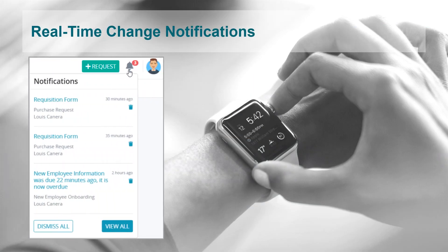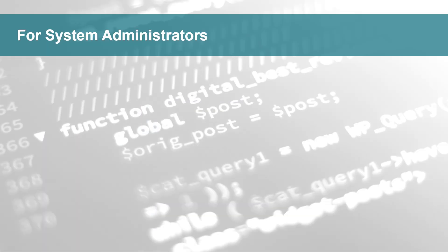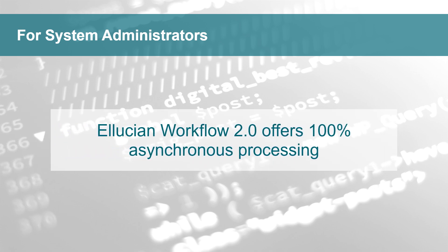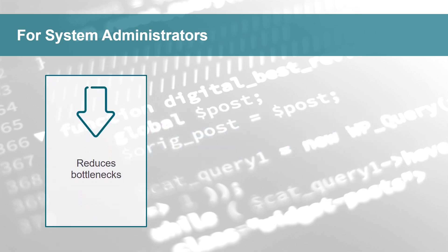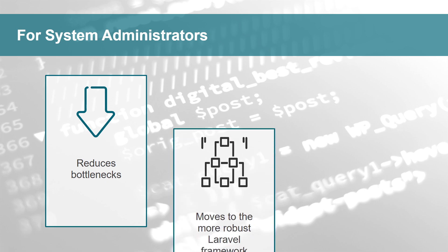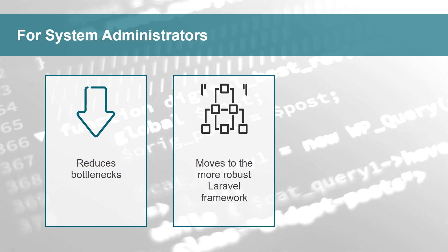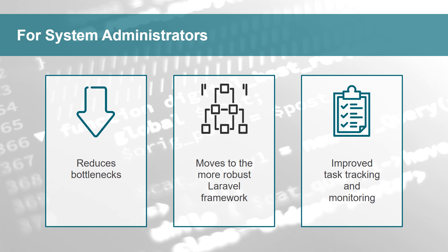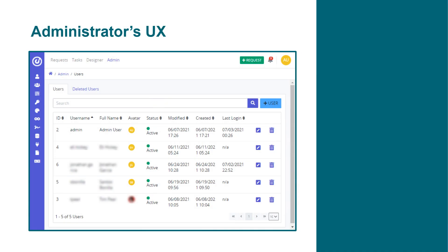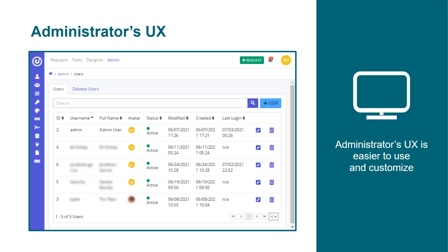Real-time change notifications keep stakeholders informed of tasks, assignments, and other pertinent information. For system administrators, Workflow offers 100% asynchronous processing, which allows job execution no matter the order in which processes are received. This reduces bottlenecks caused when one process has to wait for another to finish. Further, this release decouples ProcessMaker's proprietary legacy code and moves to the more robust Laravel framework, eliminating old JavaScript libraries. System admins will appreciate the improvements in task tracking and job monitoring, and how the new, more robust 2.0 framework provides better performance and scalability. Lastly, the administrator's UX for managing users and processes is easier to use and customize to meet individual needs and preferences.